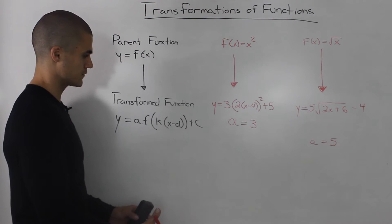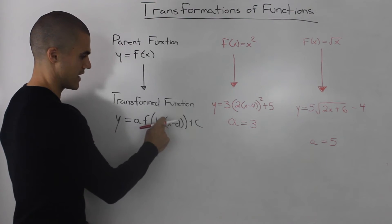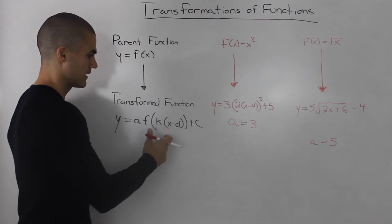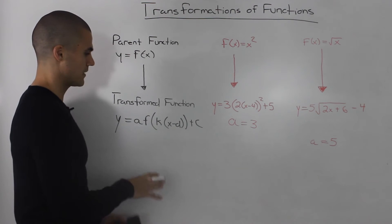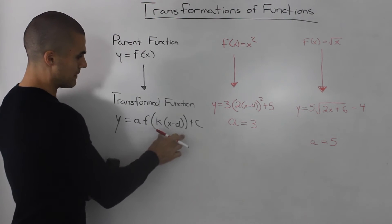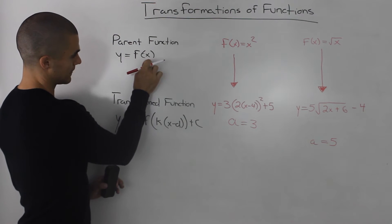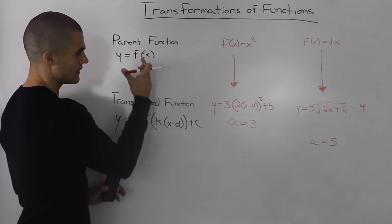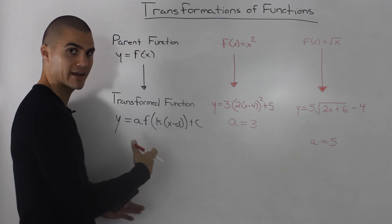Now going back to our general transformation, I'm going to talk about this whole portion in the bracket here, this k(x-d). And this is the trickiest part to explain, so I'm going to do my best. Try to follow along as best as you can. So basically, what we're doing is we're taking a function f(x) and for that specific x value in the brackets, we're subbing in this k(x-d).